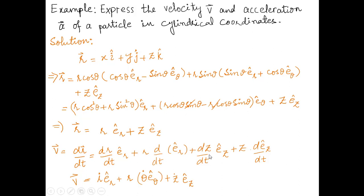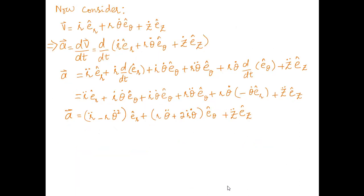Taking the derivative of R with respect to time and applying the product rule to each term, using ∂ê_z/∂t = 0, we obtain the velocity expression V = ṙ ê_r + r θ̇ ê_θ + ż ê_z in cylindrical polar coordinates.